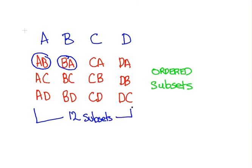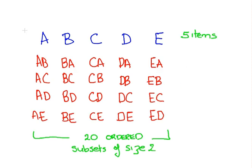So suppose for argument's sake we had five possible numbers to choose from and we're going to pick two. In this case we would have twenty ordered subsets of size two. Again, this is because we have nice manageable numbers to work with that we're able to write them all out.